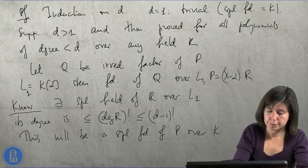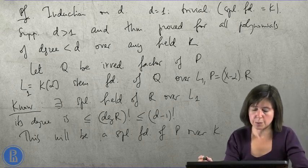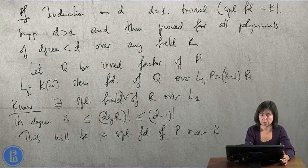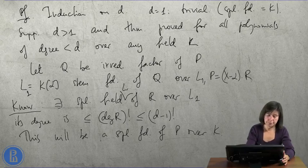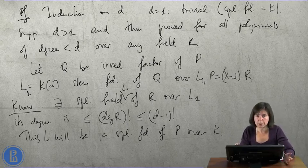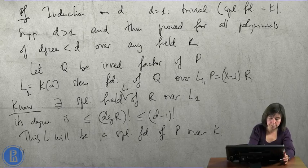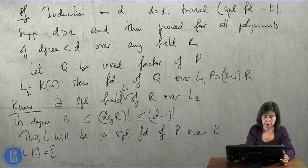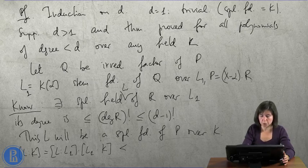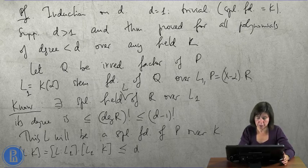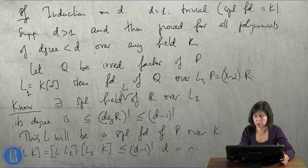And the degree, well, let us give it a name. Let's call it L. This L will be a splitting field of p over k, and its degree is equal to L over L1 times L1 over k. So, of course, it is less than or equal to d minus 1 factorial times d, which is d factorial.